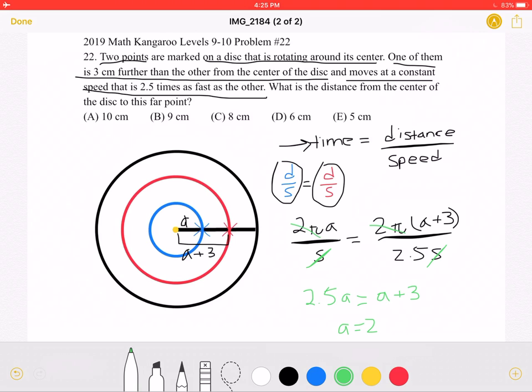However, the question is not asking us for A, but it is asking us for A plus 3, the distance from the center of the disk to this far point. So A plus 3 would be equal to 5 since A is equal to 2. So answer choice E, 5 centimeters, must be correct.